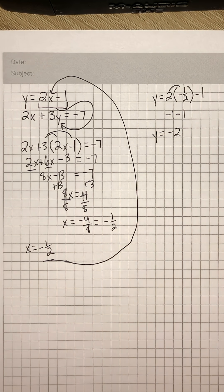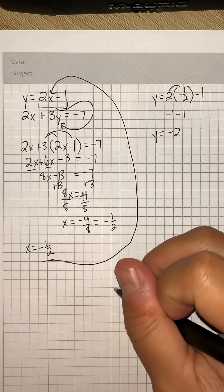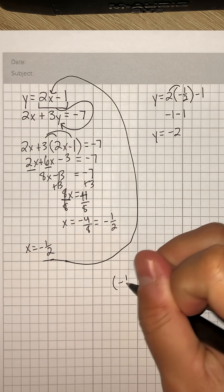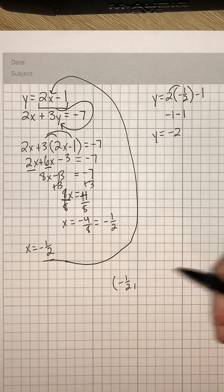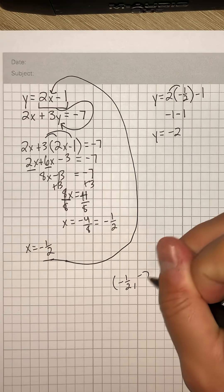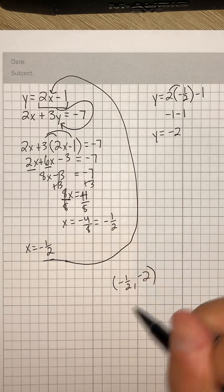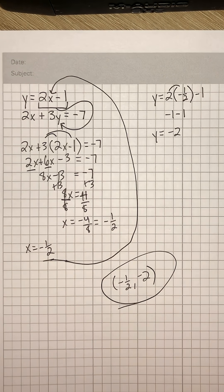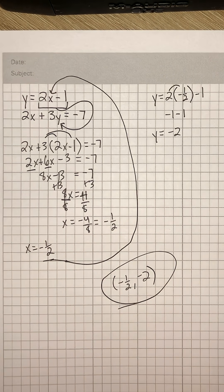So our full solution set would be negative 1 over 2, comma, negative 2, and that would be our answer.